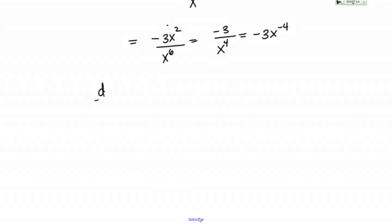So what have we just discovered? We've discovered that the derivative of x to the negative 3 equals negative 3x to the negative 4.